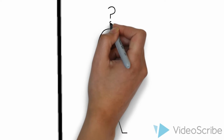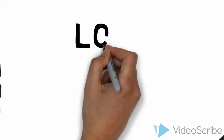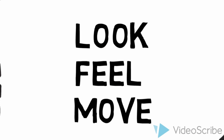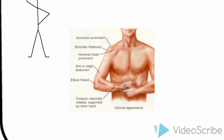When faced with a patient with a shoulder dislocation, it is important to think: look, feel, and move. On look, look for any obvious swelling as well as the previously mentioned clinical features. On feel, establish any areas of tenderness along the glenohumeral joint, as well as feeling for temperature differences between the two shoulders for possible vascular compromise.